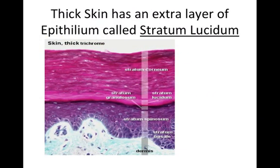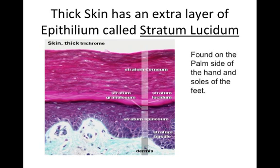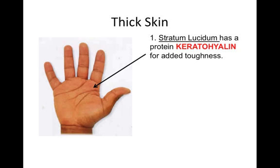Thick skin has an extra layer of epithelium called the stratum lucidum. Thick skin is only found on the palm side of the hand and the soles of the feet. The stratum lucidum contains the protein keratohyalin, which remains in that extra layer for toughness. The purpose of this extra layer is to provide protection for the hands, which do lots of work, and to protect the tissues underneath. Before we had shoes, we needed extra thick skin on the bottoms of our feet as well.